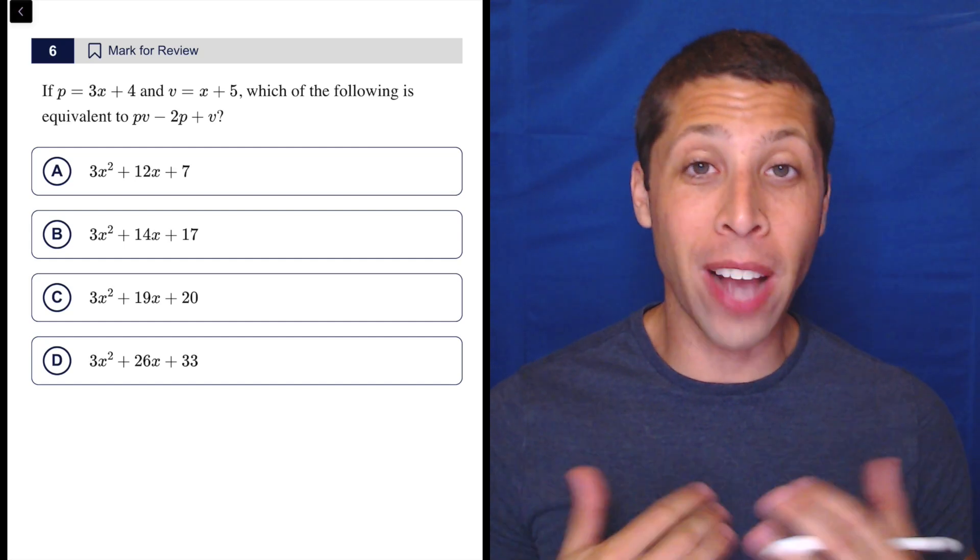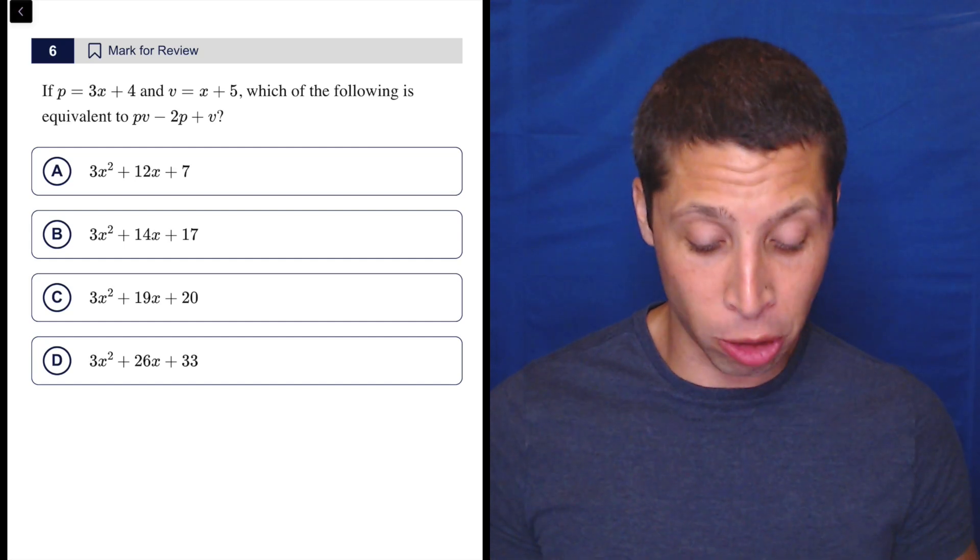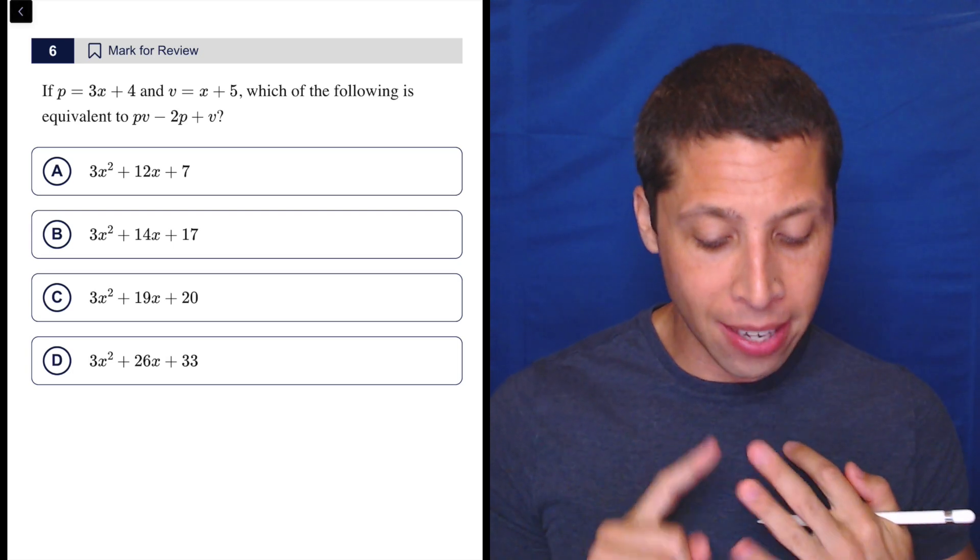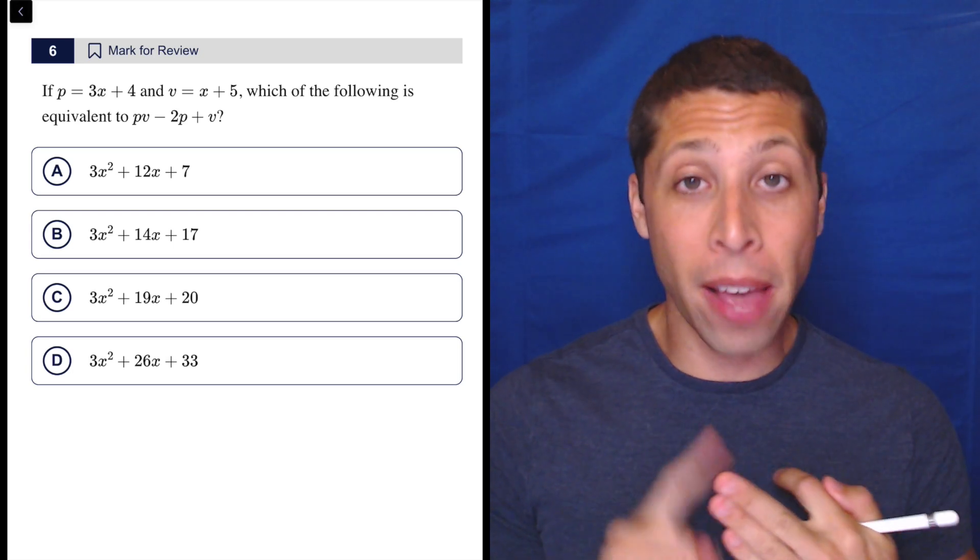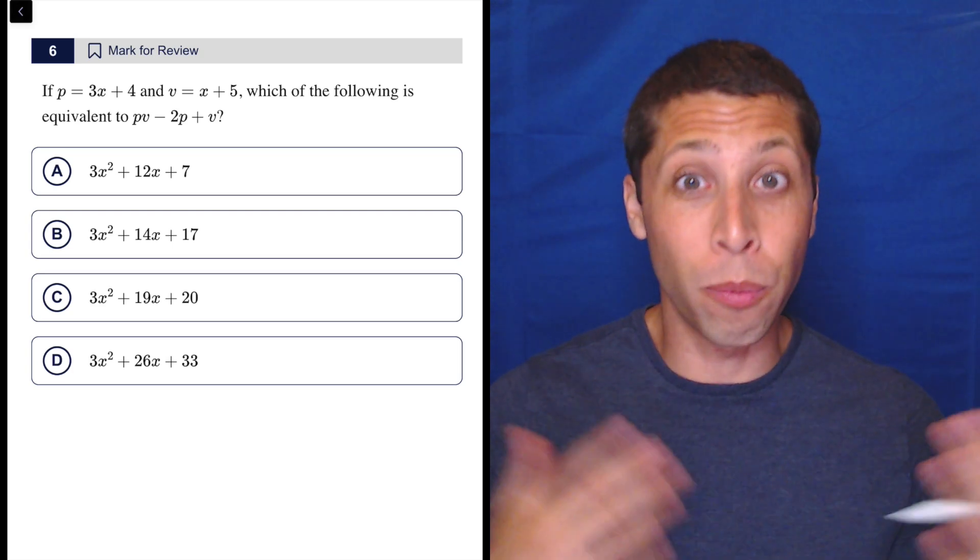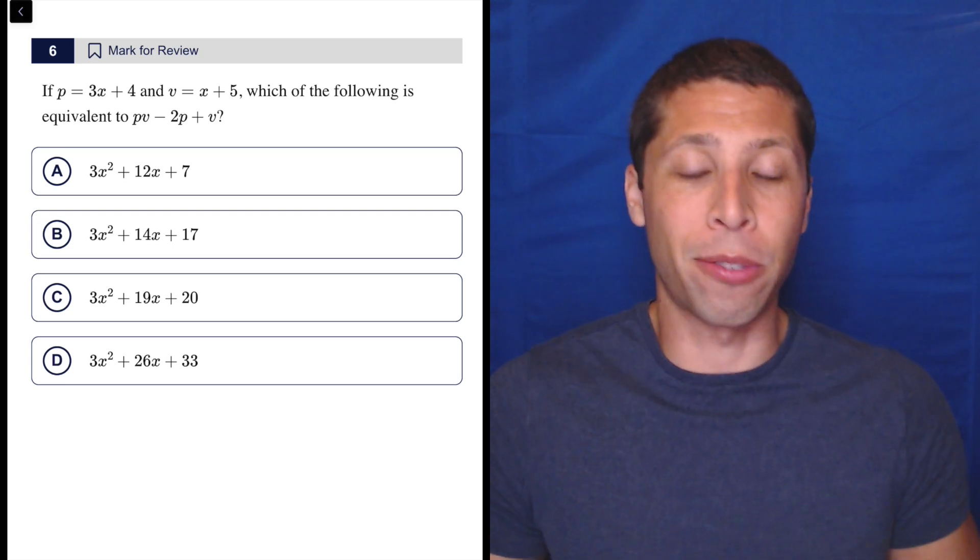This is yet another question where you've got to have an instinct to avoid algebra. This question has three variables: P, X, and V. How often in math class and school do you have three variables? Probably not very often. So something's already weird about this, right?